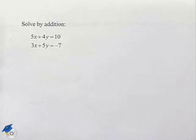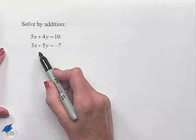Here's another problem dealing with linear systems. Solve by addition. Our first equation is 5x + 4y = 10, our second equation 3x + 5y = -7. Now if we attempt to add the equations in their present format,